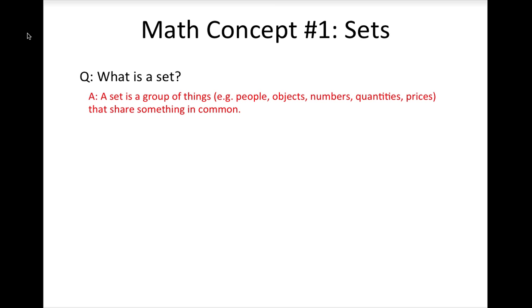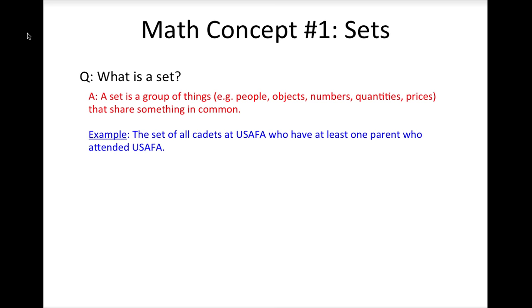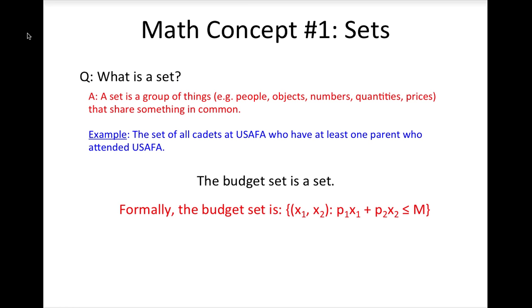For example, one set of cadets at the academy would be the set of all cadets for whom one or both parents also went to the academy. You have already studied one set in this course: the budget set. The budget set is the set of all combinations of quantities of goods one and two that the consumer can afford. Formally, the budget set is the set of all x1 and x2 such that p1 times x1 plus p2 times x2 is less than or equal to the consumer's income, m. If that combination makes the equation true, then it is in the budget set.